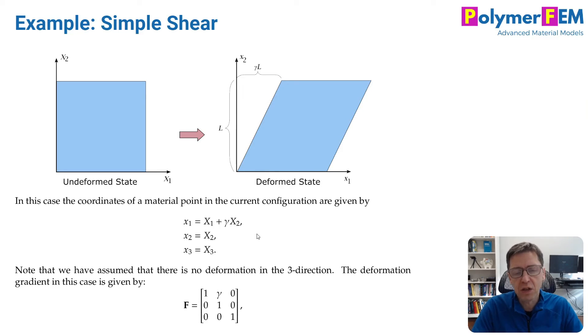We can use the definition of the deformation gradient and apply it as the partial derivatives of this transformation. We get a 3x3 matrix with F = [1, γ, 0; 0, 1, 0; 0, 0, 1], which is unsymmetric. Deformation gradients are 3x3 matrices and they're typically unsymmetric. That's the definition of the deformation gradient.